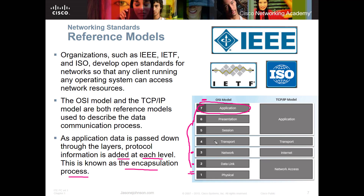The data goes to the other end, where the medium picks it up and it travels back up through the model, decapsulating at each layer. The server takes the web page request and says, 'I got a request for this page,' then sends that information back to the requesting device. That's a very high-level view of how the networking model works, and these organizations create these models and standards so everything can communicate together.